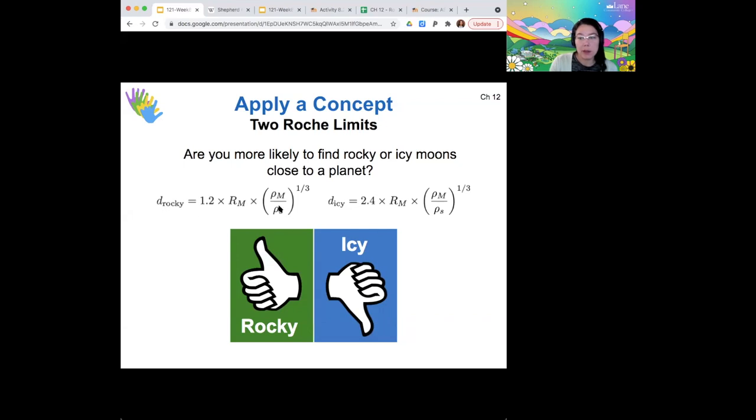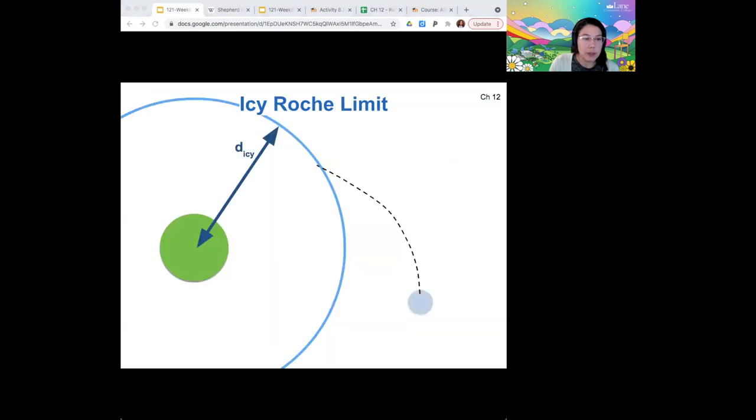But also the density of a rocky body is higher than it is for an icy body. So as this gets larger, then this whole fraction gets smaller, and so that also drives the distance down. So indeed, a rocky body is more likely to be able to get closer to a planet.